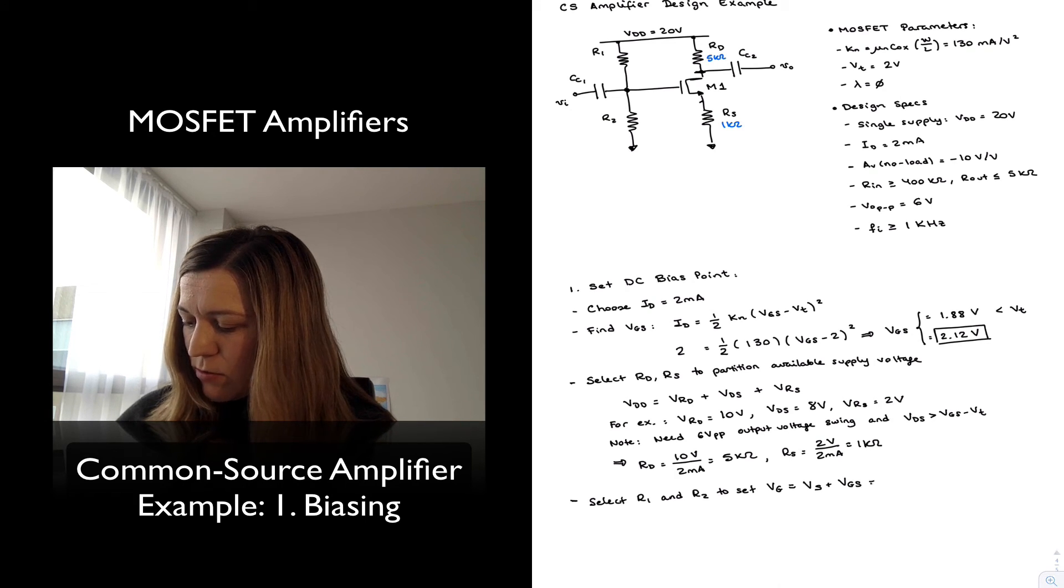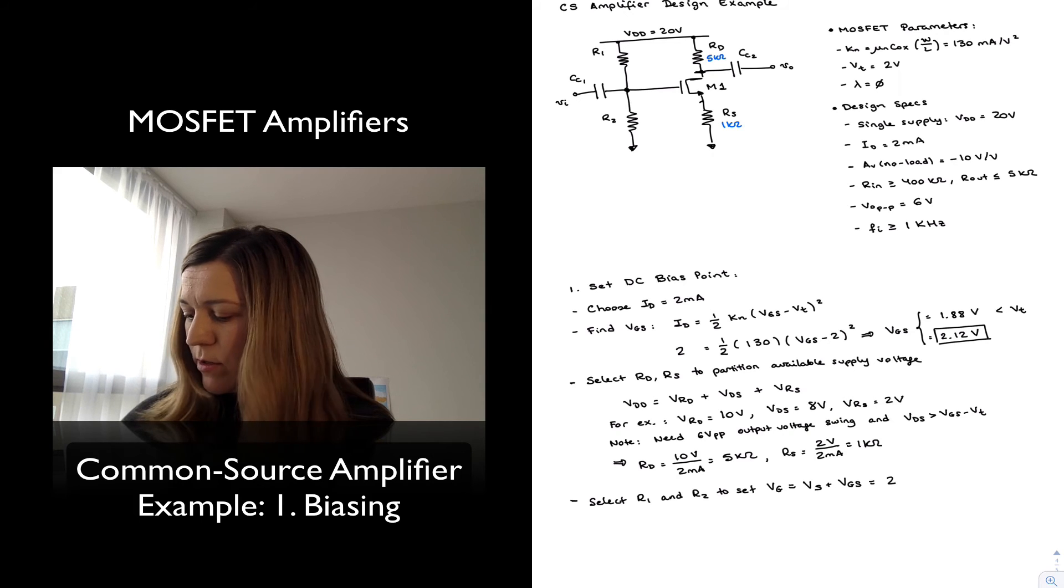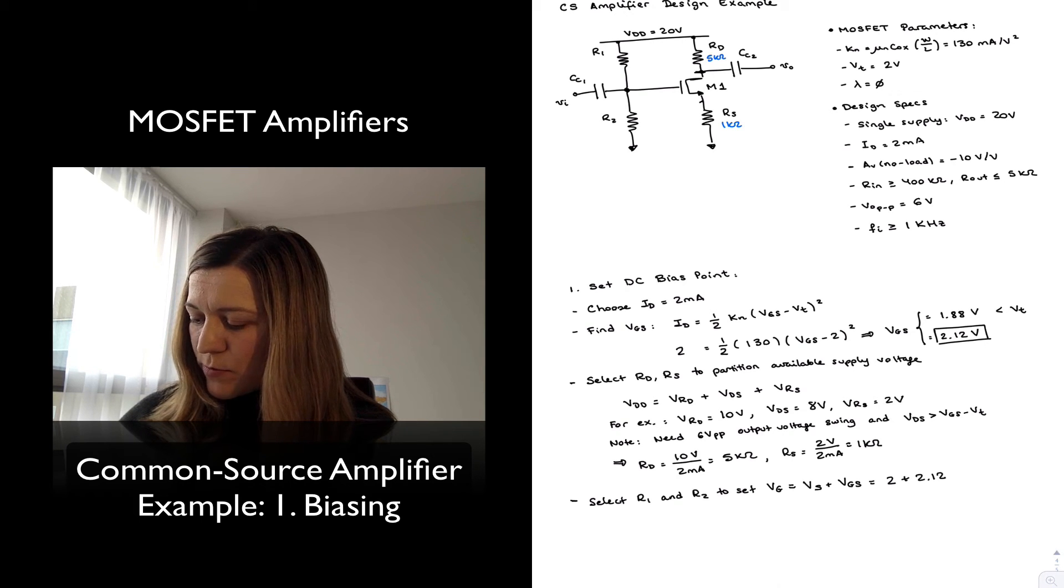Which is equal to VS is 2 volts as we designed in the previous step, and VGS is 2.12 volts, so 4.12 volts for VG.